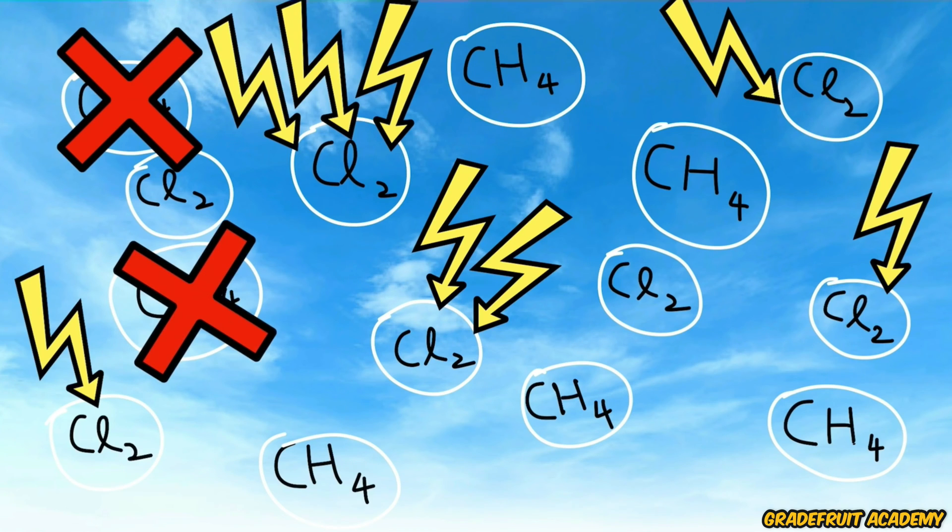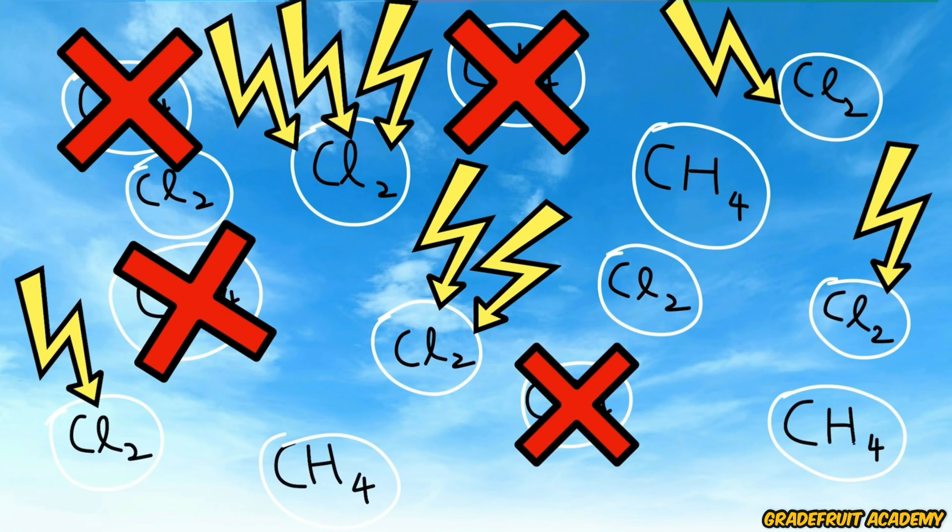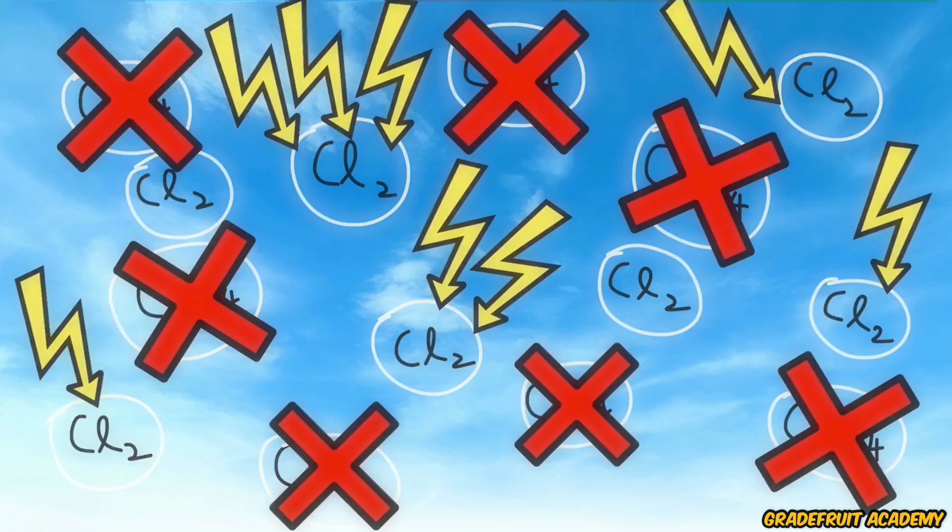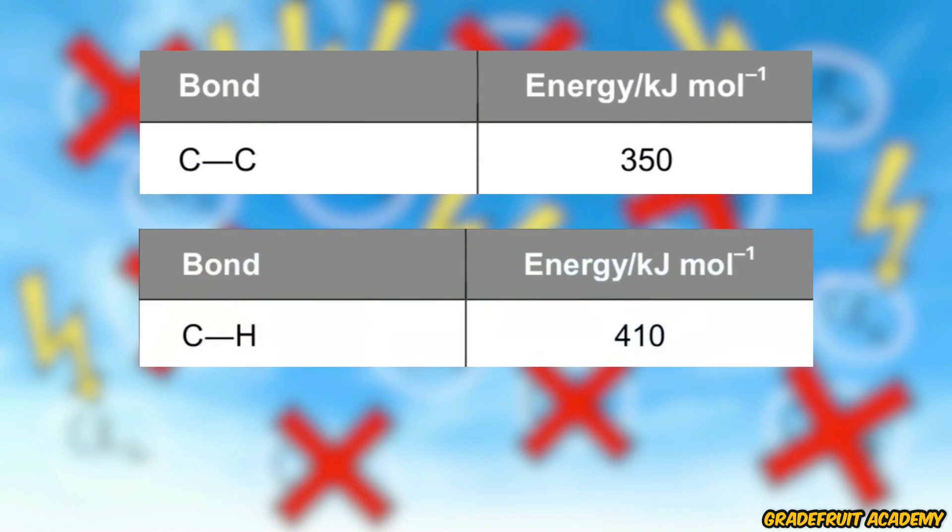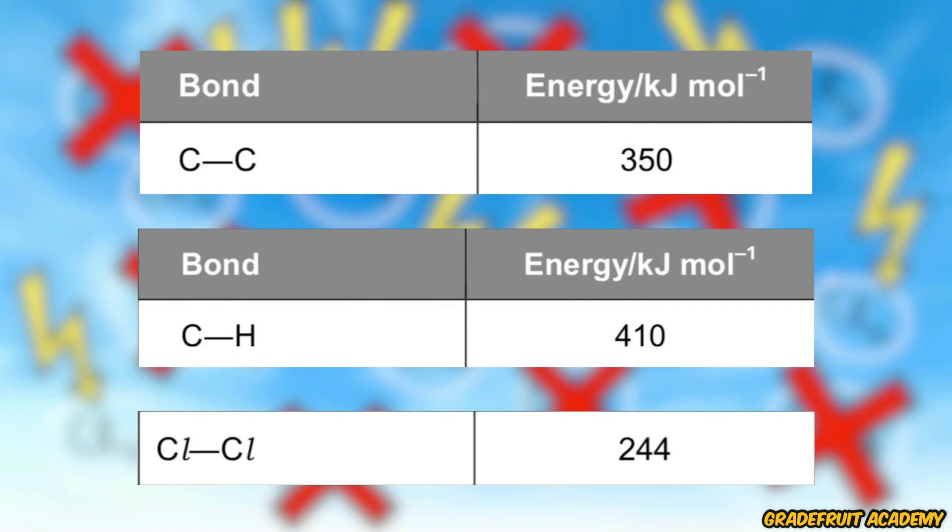The CH and CC covalent bonds in the methane or the other surrounding alkane molecules are not broken as the energy from the UV light is not strong enough to break the stronger bond energy values that they have.